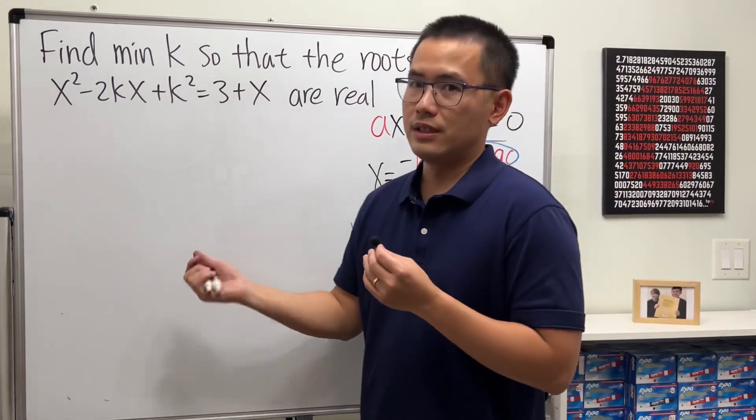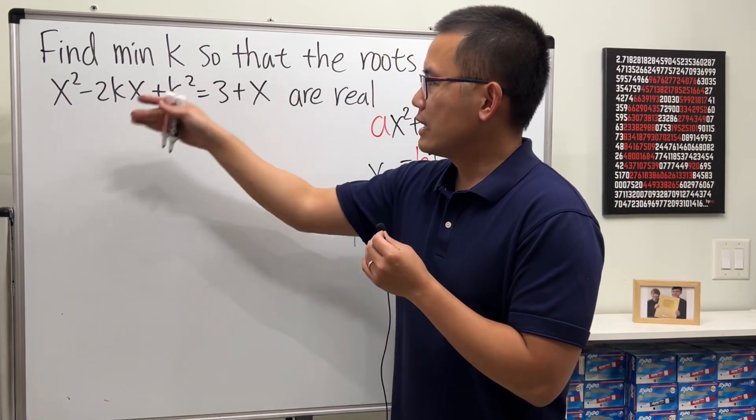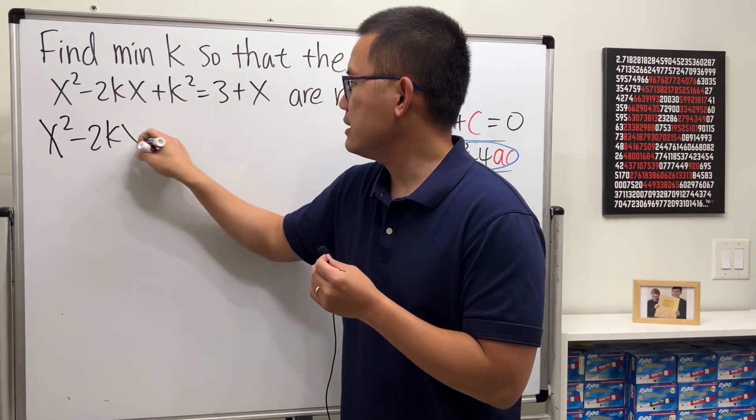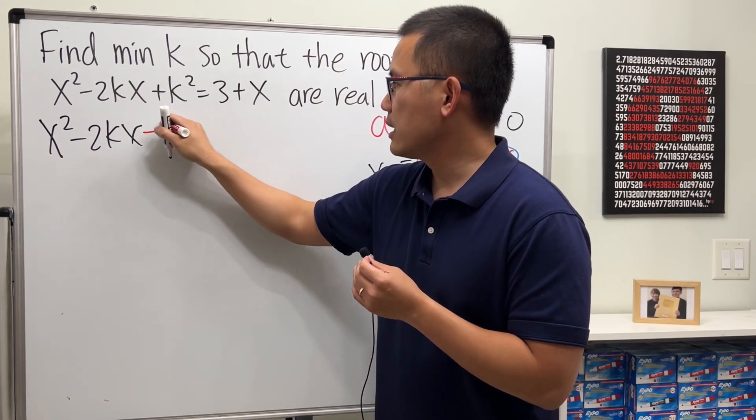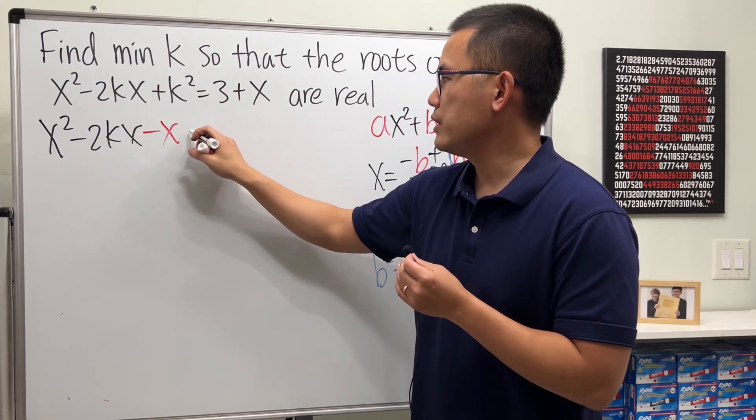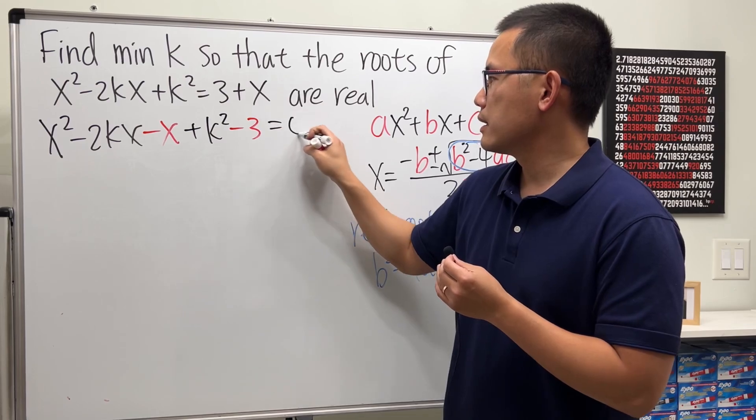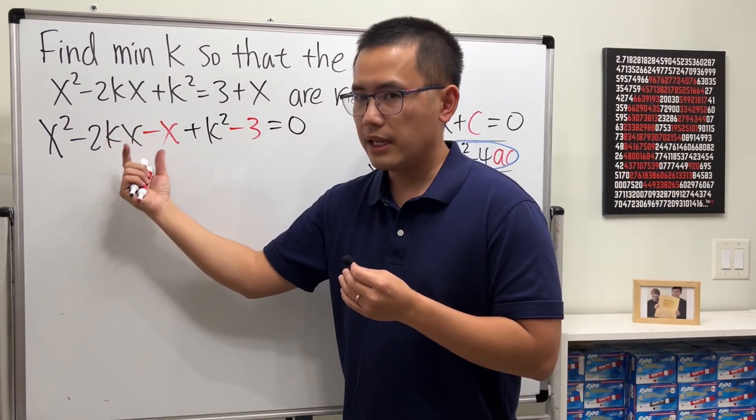I have this and that, so let's put it to the other side. We get x² - 2kx, bring this to here so negative x, and then bring the three here so we get plus k² - 3.